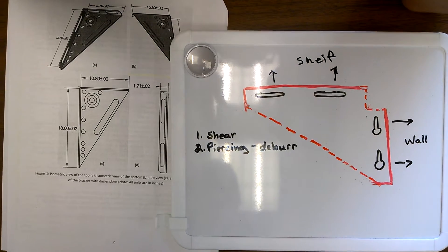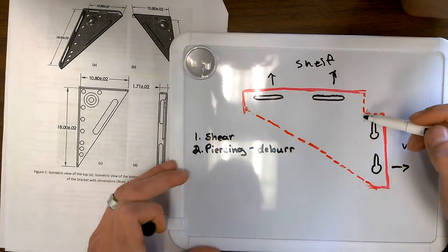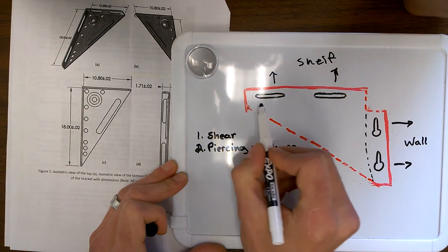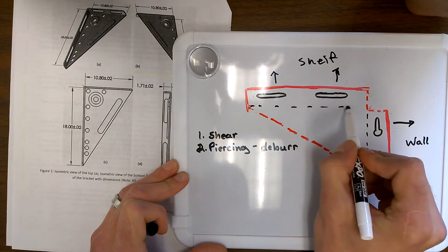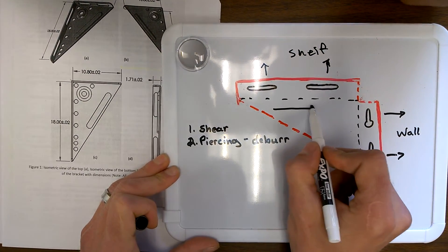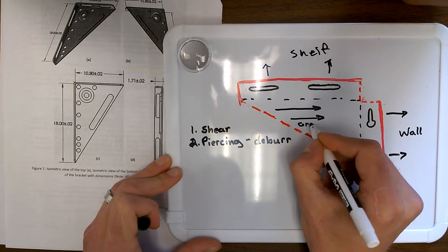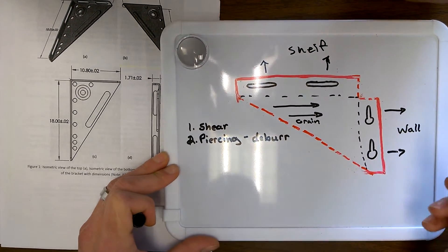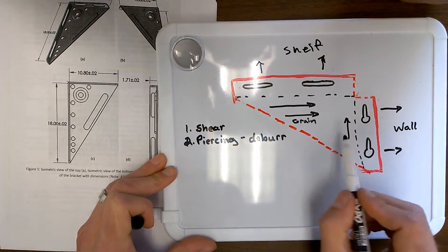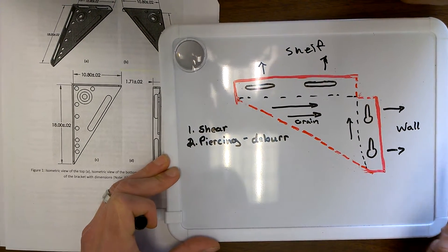Now our step three is going to be bending. I want to bend these edges down 90 degrees. And our grain is assumed to be running this way or our roll you could say. That way this edge is bending perpendicular giving it the most strength so we know that bend will be nice and strong.